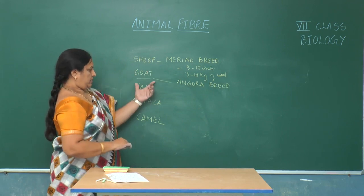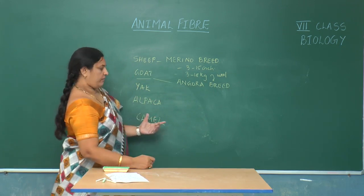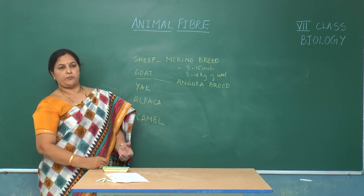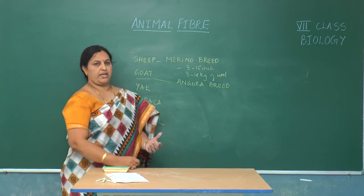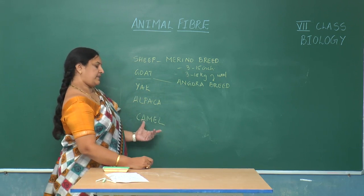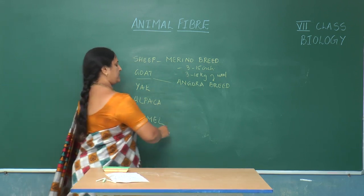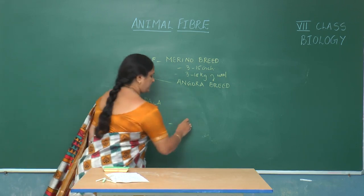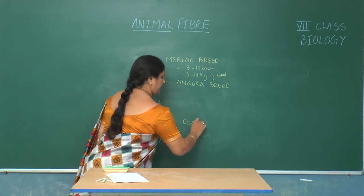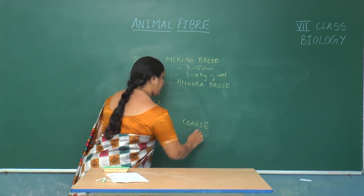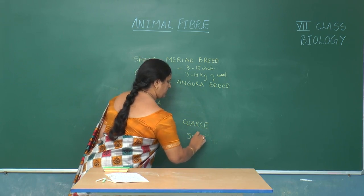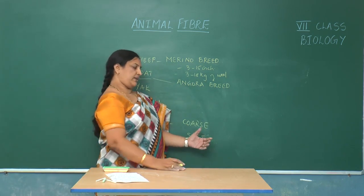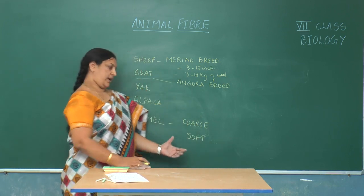These animals live in colder areas of our country like Jammu and Kashmir, Himachal Pradesh, etc. The camel lives in the desert and it produces two types of hair — one is coarse and the other is soft. Accordingly, fabrics are produced from the hair of this animal.